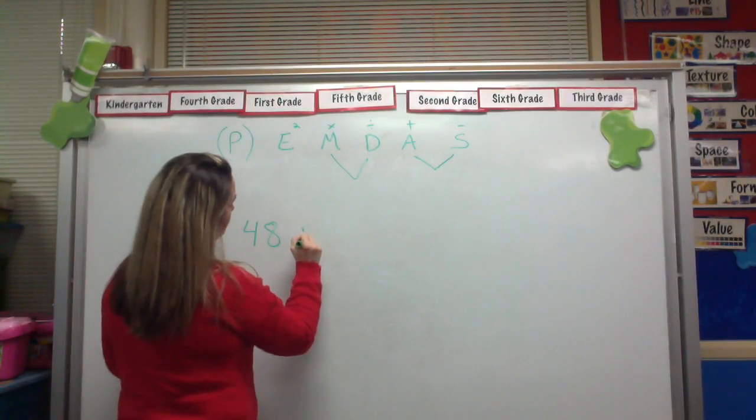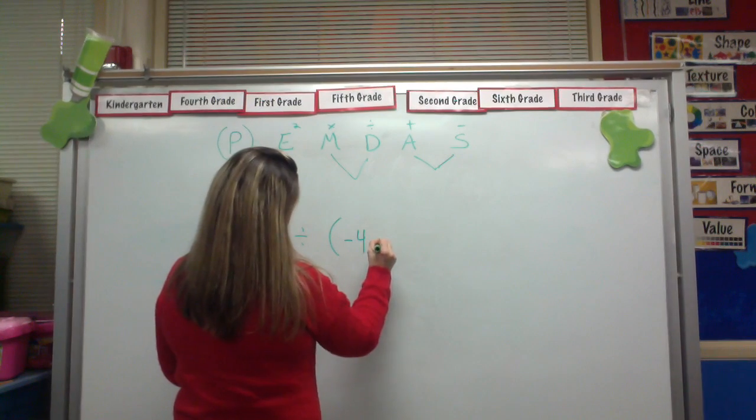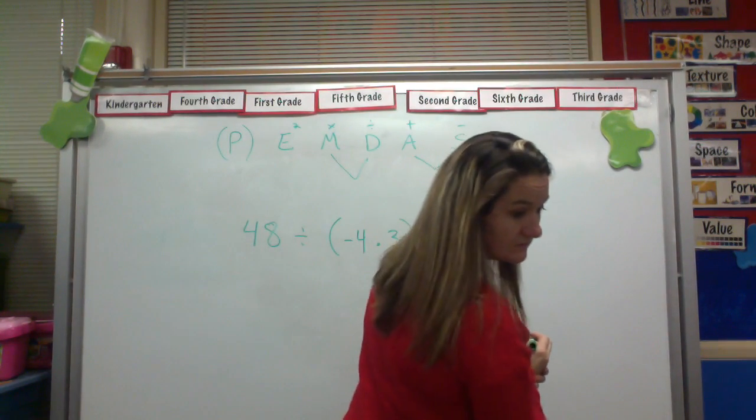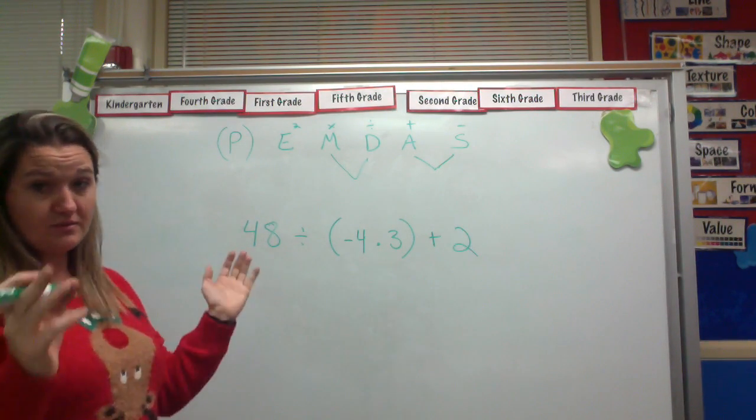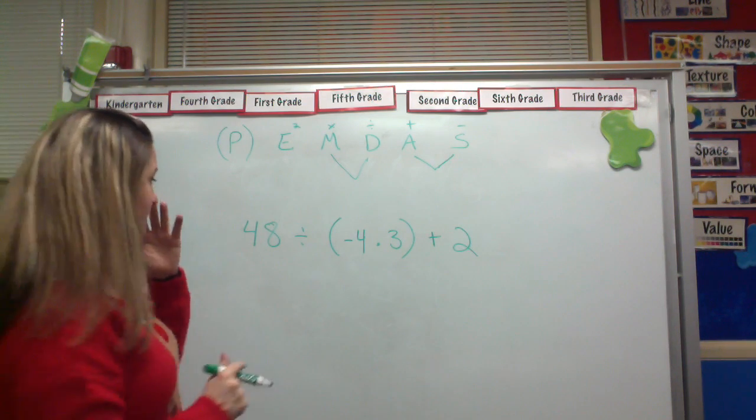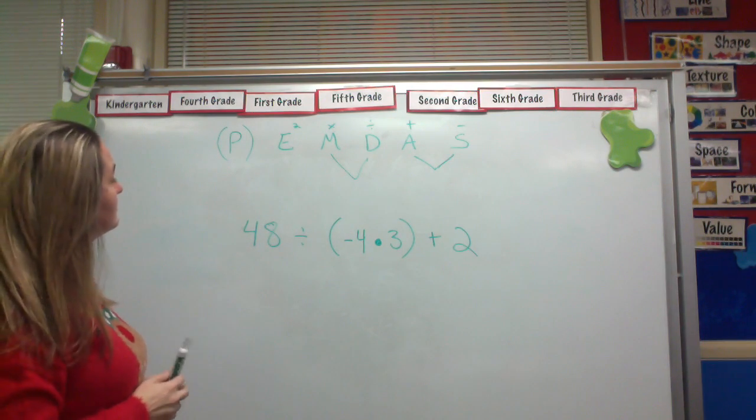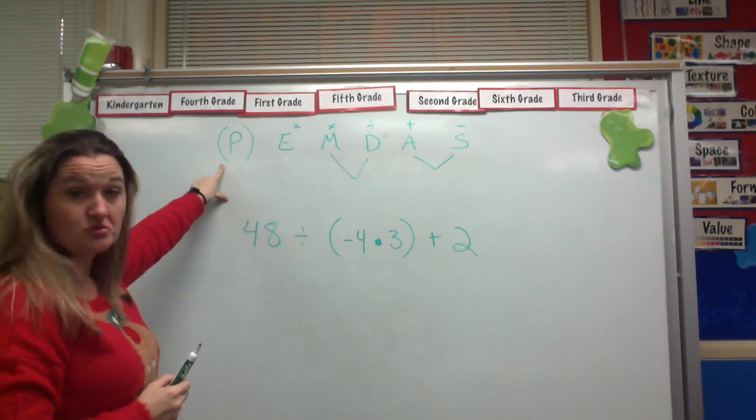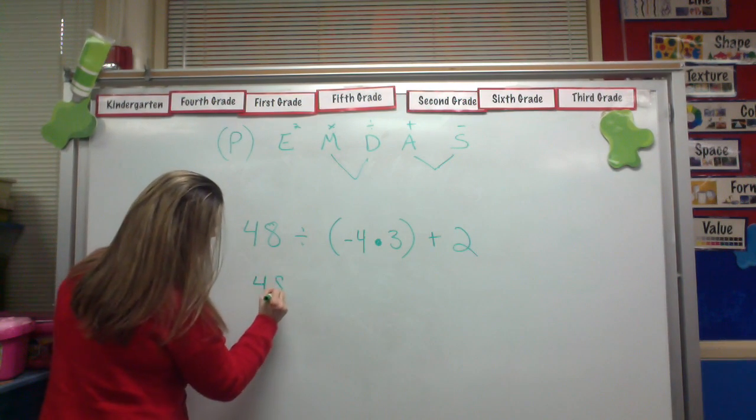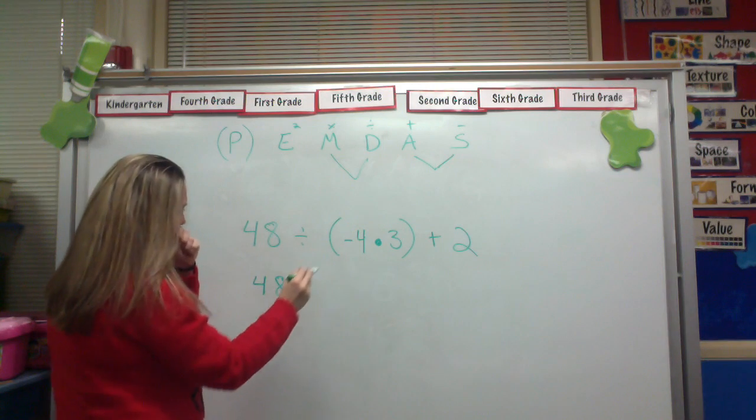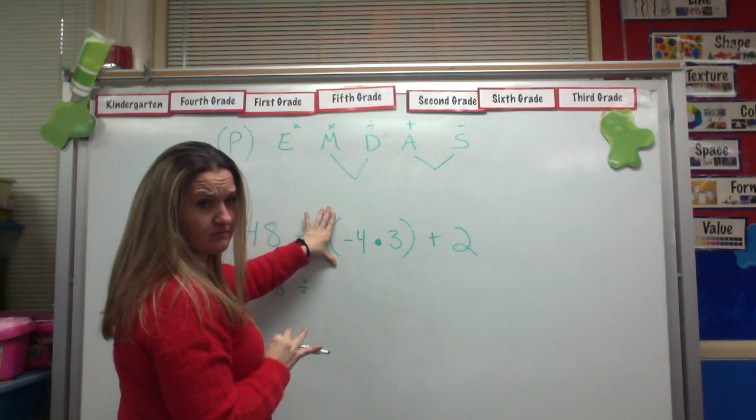Okay, 48 divided by, in parentheses, negative 4 times 3, it's not a decimal, it's times 3 plus 2. All right, so let's start with my first step, parentheses. Do I have anything in parentheses? Yeah, I do. I've got the negative 4 times 3. So let's rewrite this, and then we'll go ahead and do this step. Just do it in parentheses. Negative 4 times 3 is negative 12.